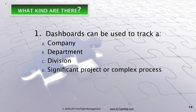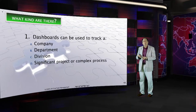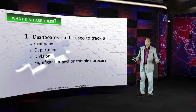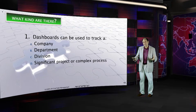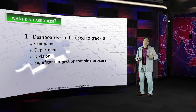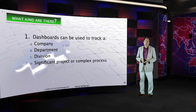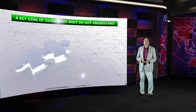What kinds of dashboards are there? We already mentioned there's company dashboards, department dashboards, division dashboards, and significant project or complex dashboards. The corporate dashboard is at 30,000 feet. When you go down to a department or division dashboard, you're at about 20,000 feet — so you're seeing more granularity and more detail. Only the top level numbers are rolling up into the corporate dashboard. And a dashboard can also be created for very important processes if they're strategic to the business.